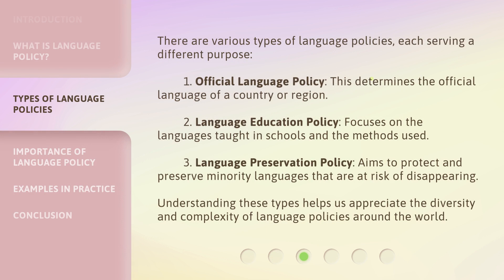There are various types of language policies, each serving a different purpose. First, Official Language Policy — this determines the official language of a country or region. Second, Language Education Policy — focuses on the languages taught in schools and the methods used. Third, Language Preservation Policy — aims to protect and preserve minority languages that are at risk of disappearing. Understanding these types helps us appreciate the diversity and complexity of language policies around the world.